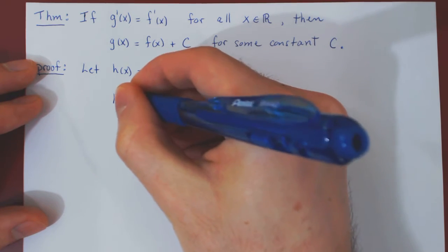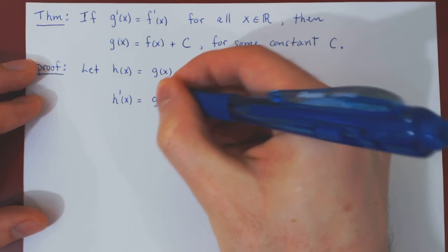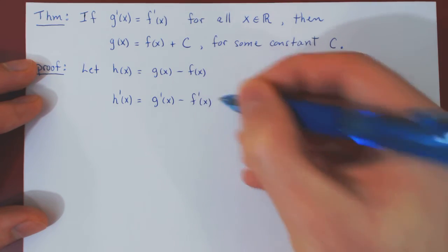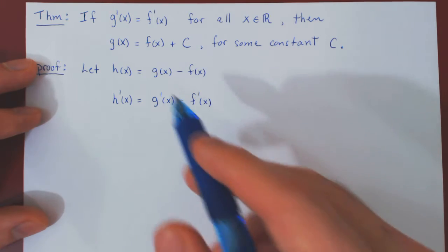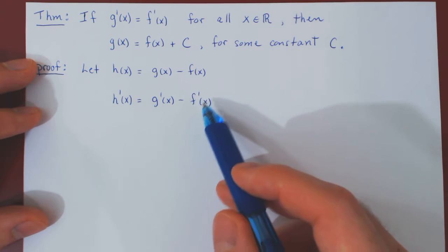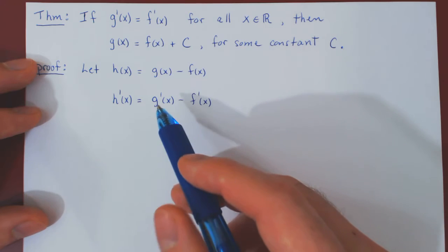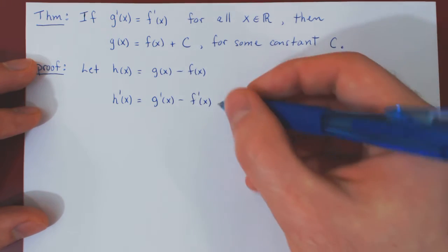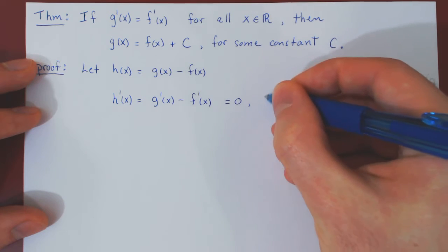The derivative of h will be the derivative of g minus the derivative of f. But by assumption, g prime of x is equal to f prime of x. And this is true for all values of x. So therefore this is equal to zero for all values of x.